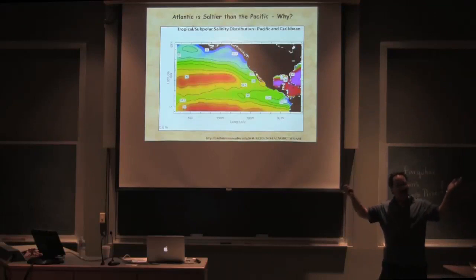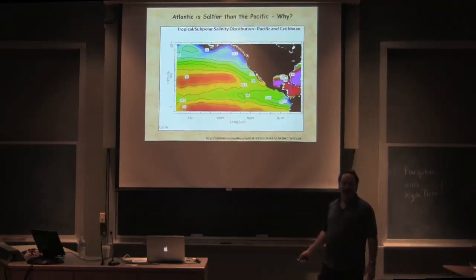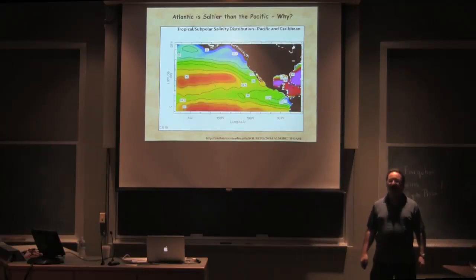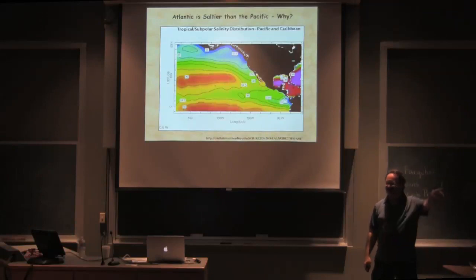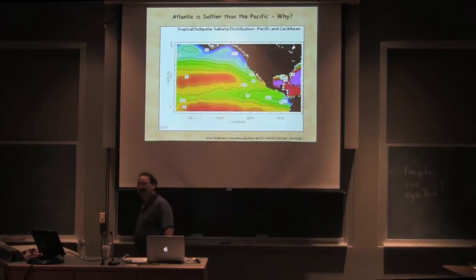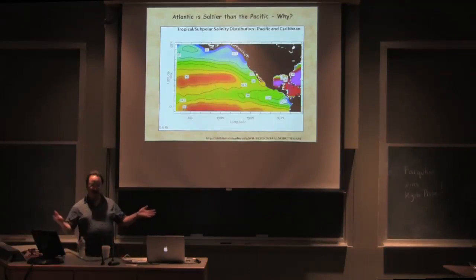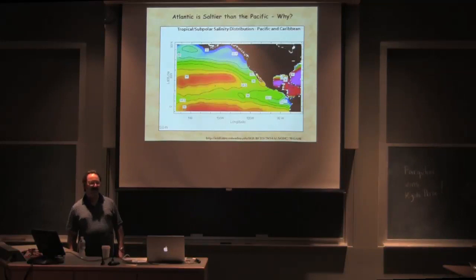To make the Atlantic saltier you have to evaporate water and put it somewhere — but it doesn't help if it evaporates here and falls here; that's a net sum of zero. So where is the watershed? How do you get water from the Atlantic to the Pacific? You can't take it into South America because the currents don't flow that way. Where does it go?